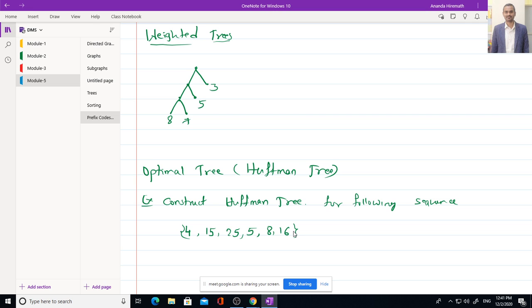Say this 8 is at level 3, 1, 2, 3. Now, weight of this node will be 8 into 3. It will be multiplied by level of that leaf node.